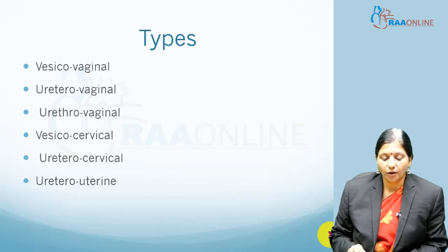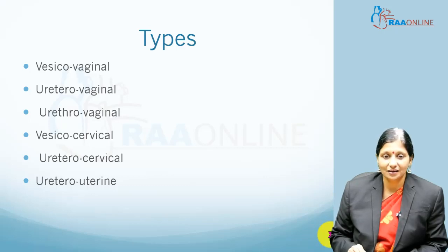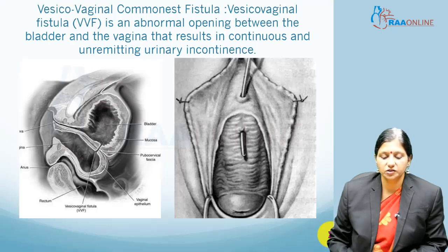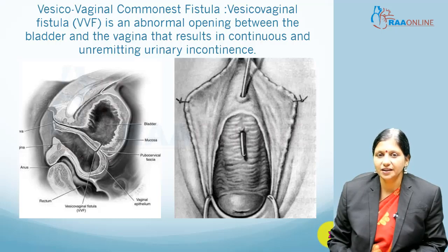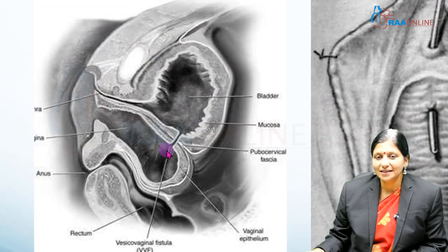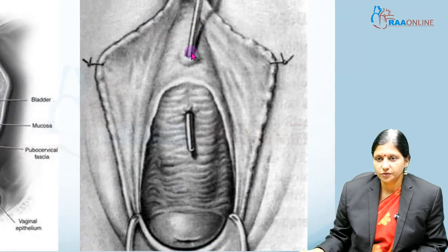The commonest type is the vesico-vaginal fistula, followed by urethro-vaginal, vesico-cervical, urethro-cervical, and urethro-uterine fistulas, which are rare. The vesico-vaginal fistula is an abnormal opening between the bladder anteriorly and the vagina posteriorly, resulting in continuous and unremitting urinary incontinence. Sometimes a urinary catheter can be inserted and it will come out through the vagina.